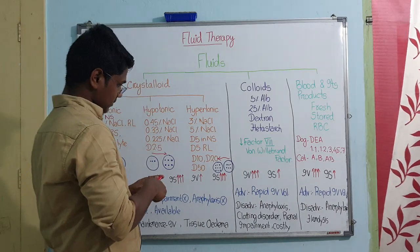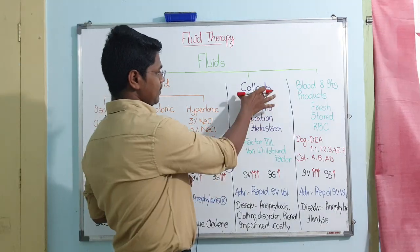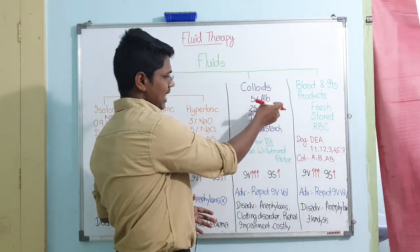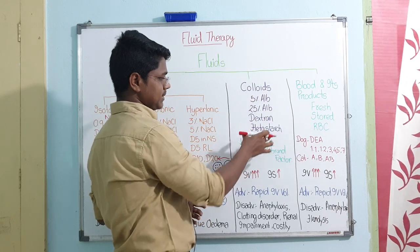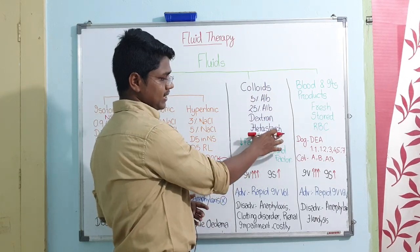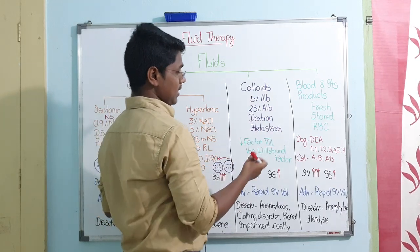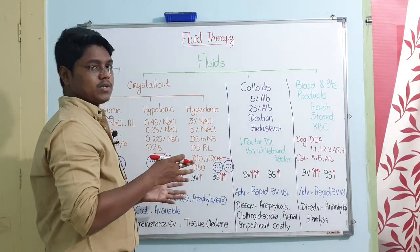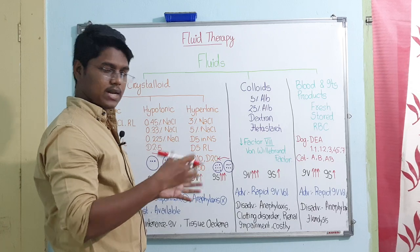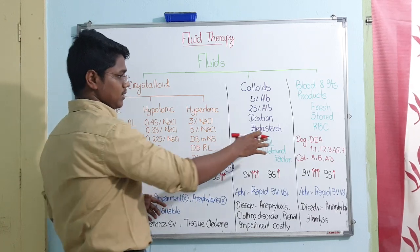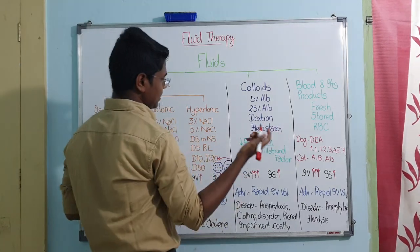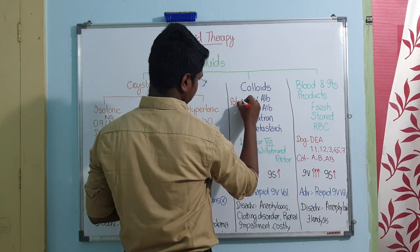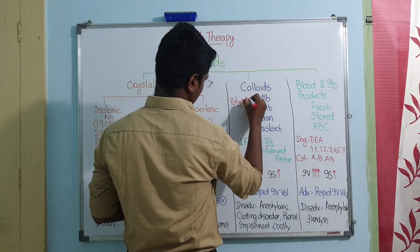Coming to colloids - these are basically larger particles. Examples are albumin, whether 5% or 25%; Dextran and Hetastarch - this is more popular. Also you will find Hemacyl, which contains polygelene, a gelatin product - that is also a colloid. And blood and its products, whether fresh blood, stored blood, or RBC.